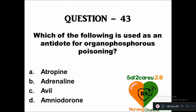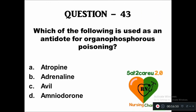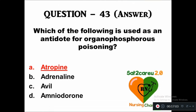Question 43: Which of the following is used as an antidote for organophosphorus poisoning — option A: atropine, B: adenylate, C: avil, D: aminodorant. The right answer is atropine is used as the antidote for organophosphorus poisoning.